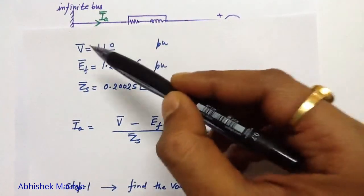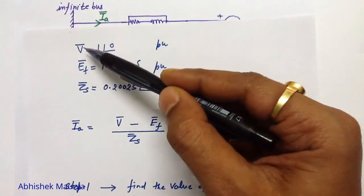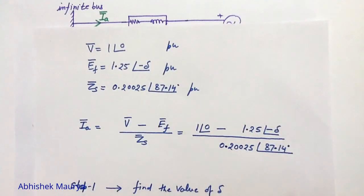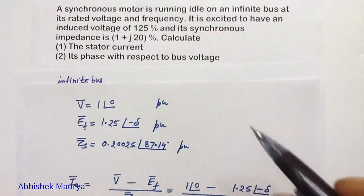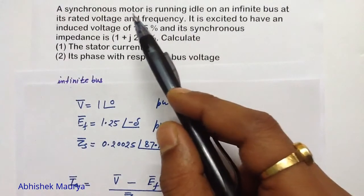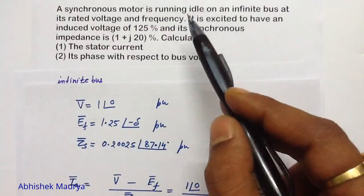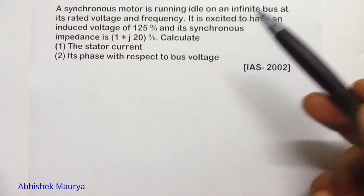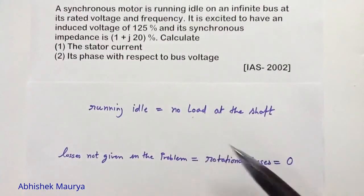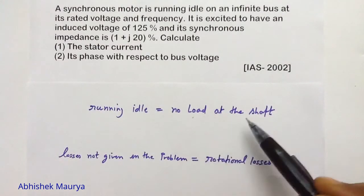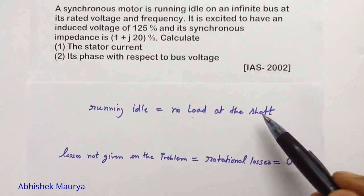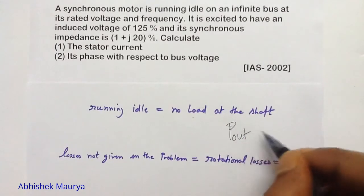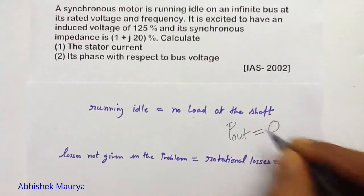In the third step, we can easily find the phase difference between the terminal voltage V and IA, and the question will be solved. In this question, it is stated that the synchronous motor is running idle, meaning there is no load at the shaft. If there is no load at the shaft, the mechanical power output of the synchronous motor is 0.